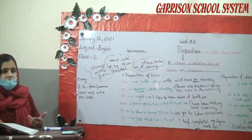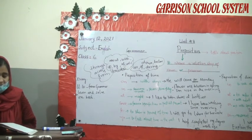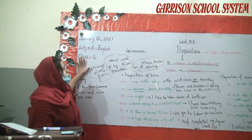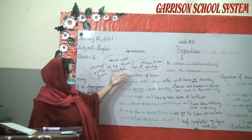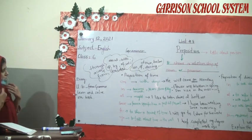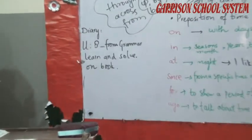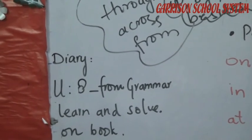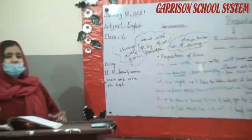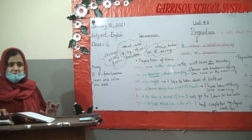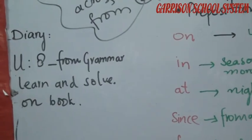This is your unit number 8. We have studied specific prepositions commonly used, which appear in your exercise with examples. You have to read and learn the whole chapter. Your diary task is unit number 8 from the grammar book — learn and solve it in your book, do practice of the prepositions. Your task is to underline the prepositions from any chapter of your third term. Thank you very much, take care.